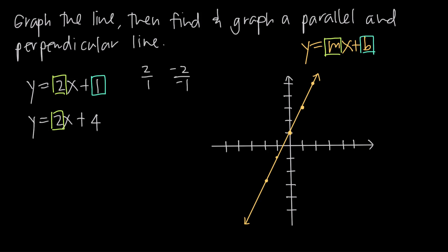When I graph this parallel line, I know it's going to look the same except the y-intercept will be 4 instead of 1. So I go up to positive 4 along the y-axis, then go down 2 and over 1 to plot additional points. When I draw in that line, it looks parallel to my original line — meaning they run at exactly the same angle and are never going to intersect each other, no matter how far we extend them.